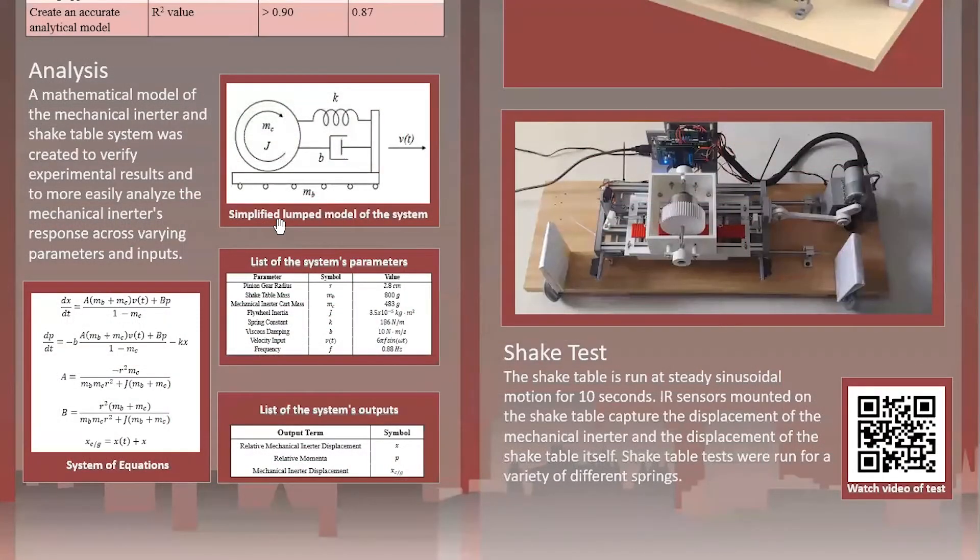A mathematical model of the mechanical inerter and shake table is a single system created to verify experimental results and to easily analyze the inerter's response to varying inputs. More specifically, we used this to determine which spring and flywheel constants most effectively dampen input vibrations, and we used this to influence our final design decisions.